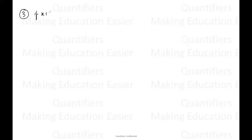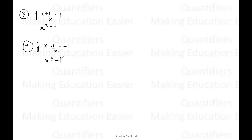Third result: if X plus one by X is equal to one, then X cubed equals negative one. Fourth result: if X plus one by X is equal to negative one, then X cubed equals one. Now let's say the question is: if X plus one by X is equal to negative one, we have to find X to the power 2001 plus one divided by X to the power 2001.